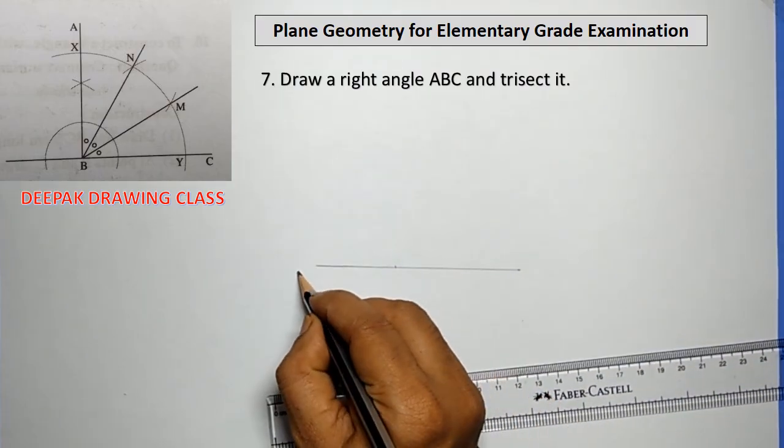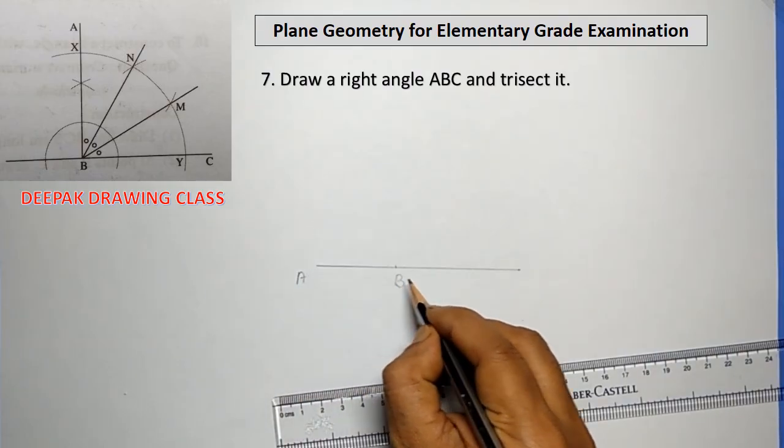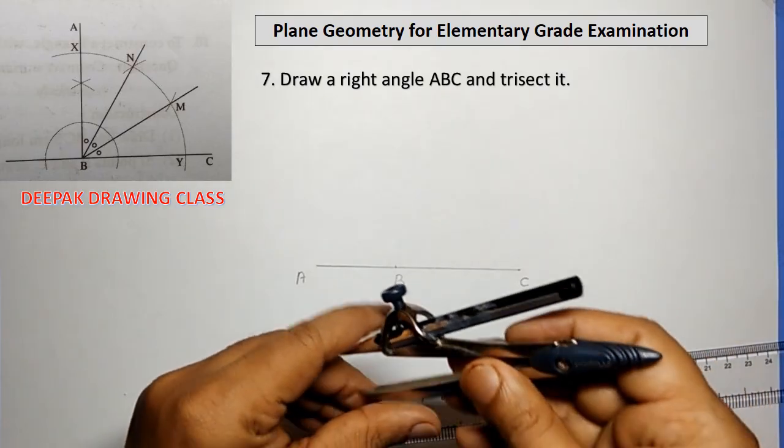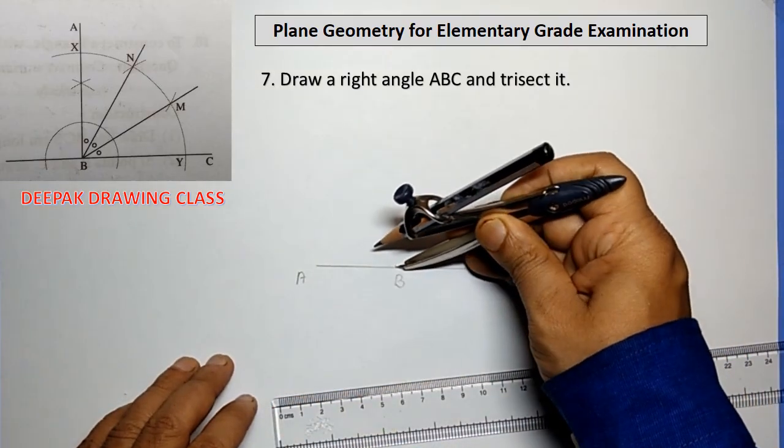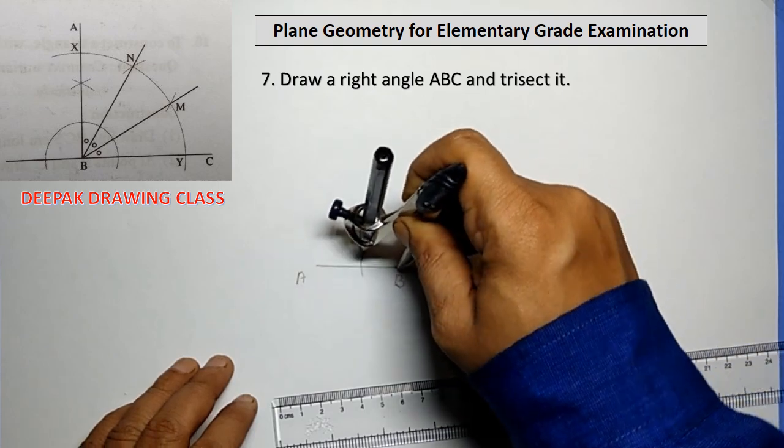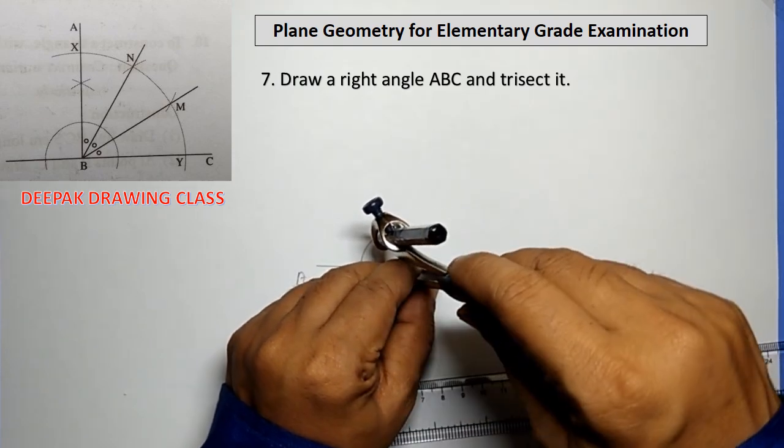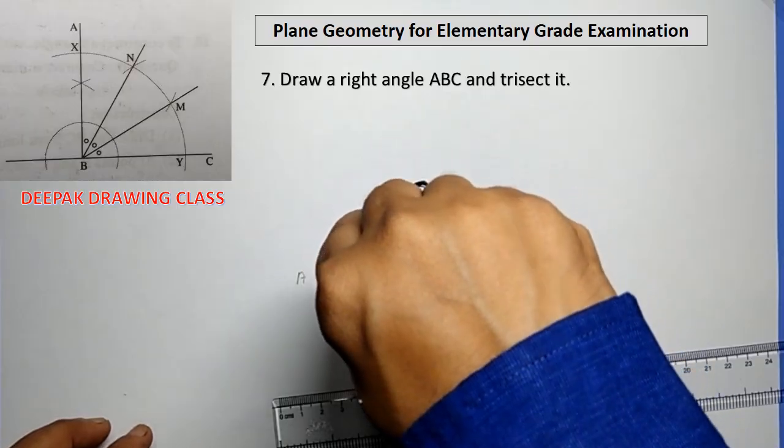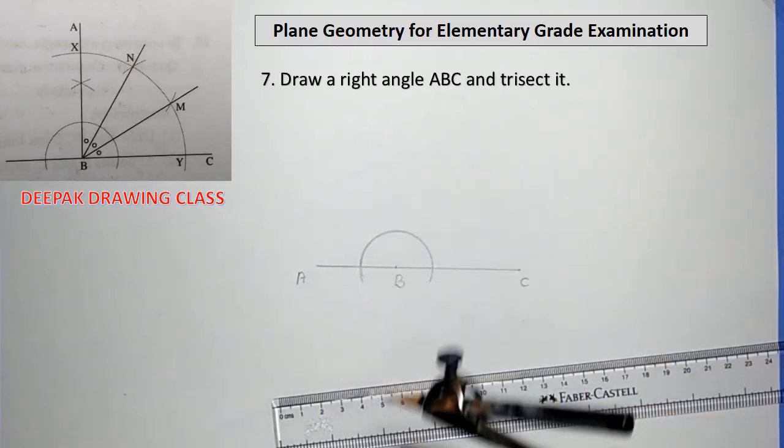First of all, draw a line 10 centimeters long and mark 4 centimeters as another point. Name all three points as A, B, and C respectively. Then take a compass and with center B and any suitable radius, draw a semicircle arc intersecting the given line.